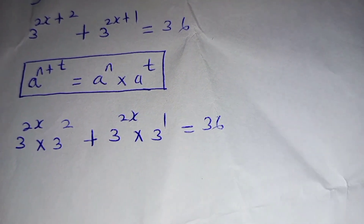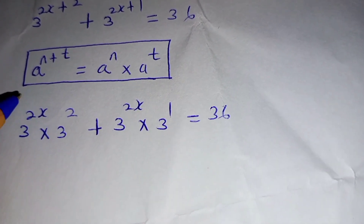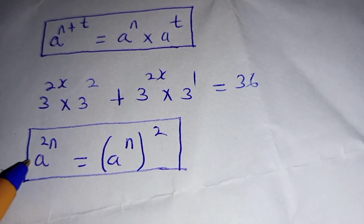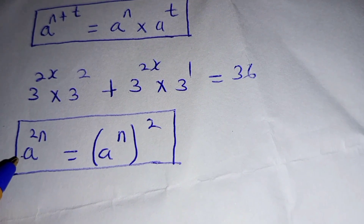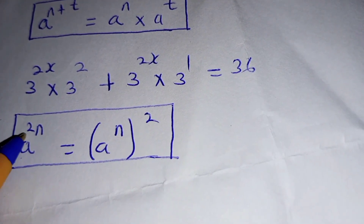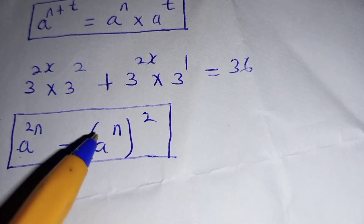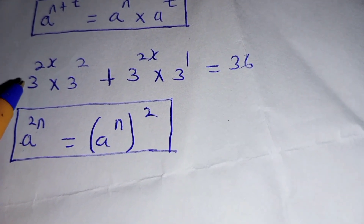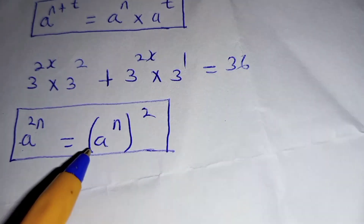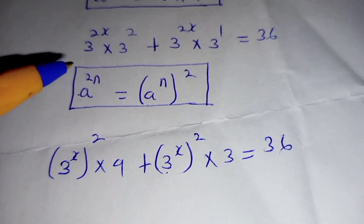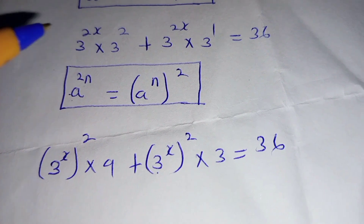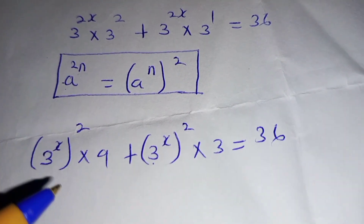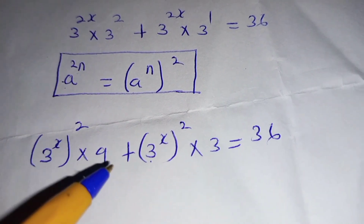From there we can also make use of this law of indices so that we can express 3^(2x). We shall make use of the law whereby a^(2n) is the same as (a^n) squared. So 3^(2x) can be written as (3^x) squared. And 3 squared is 9.